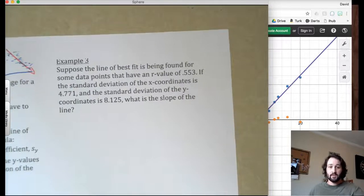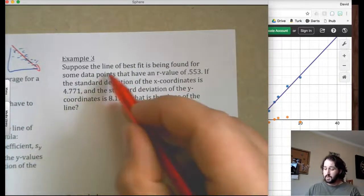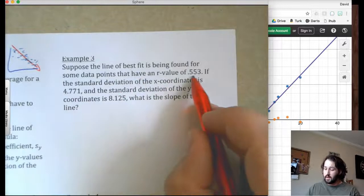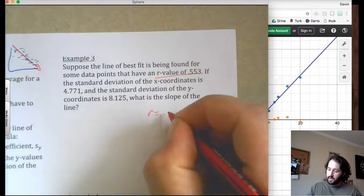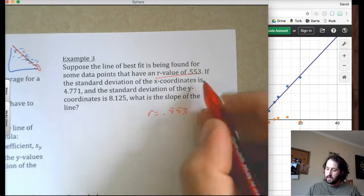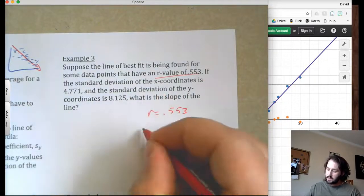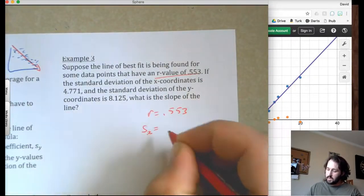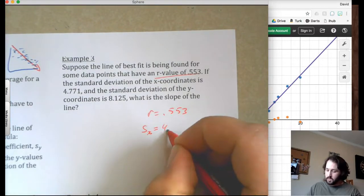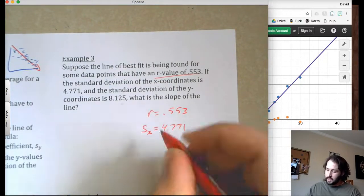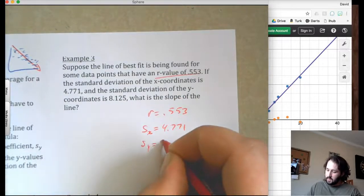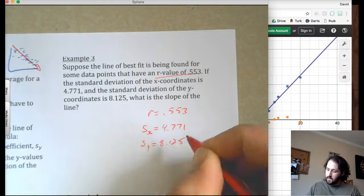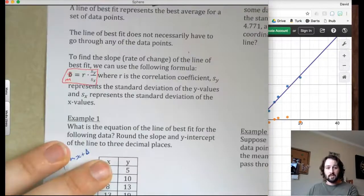Alright. Now I think we're actually going to get to use that point. So suppose the line of best fit is being found for some data, blah, blah, blah. R value of 0.553. So I'm going to have R equals 0.553. Standard deviation of the x, so s sub x, is 4.771. So 4.771. And the standard deviation of the y is 8.125.